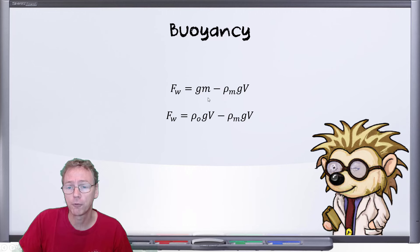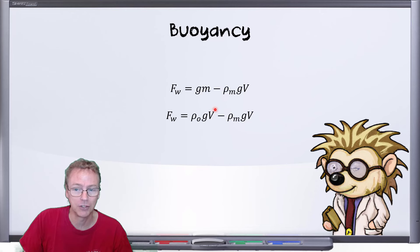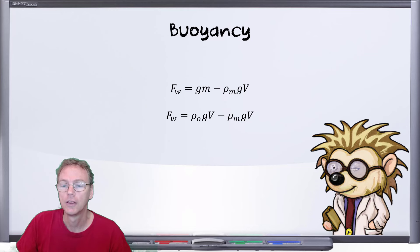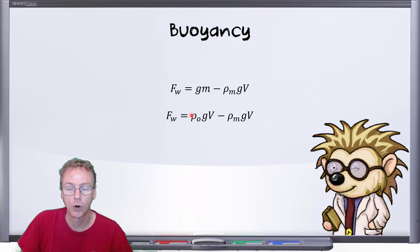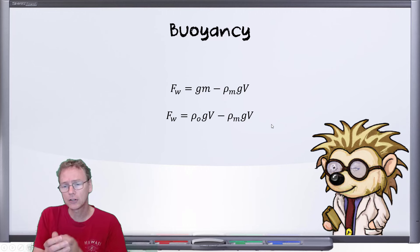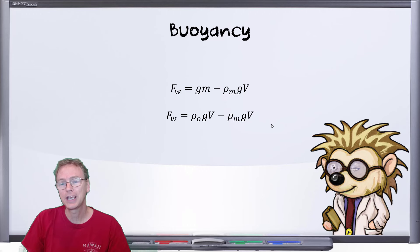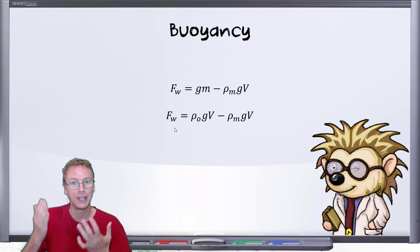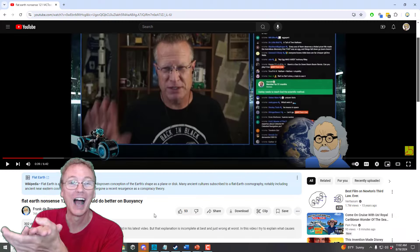If we want to express the mass of the submerged object in terms of the displaced volume, then for a completely submerged object, the weight term can be described as rho sub O — the density of the object — times the volume of the object. That's the mass. These are equivalent, and I like to put it in those terms so we can clearly see that it is the difference between the two densities that ultimately produces the net force acting on that object.